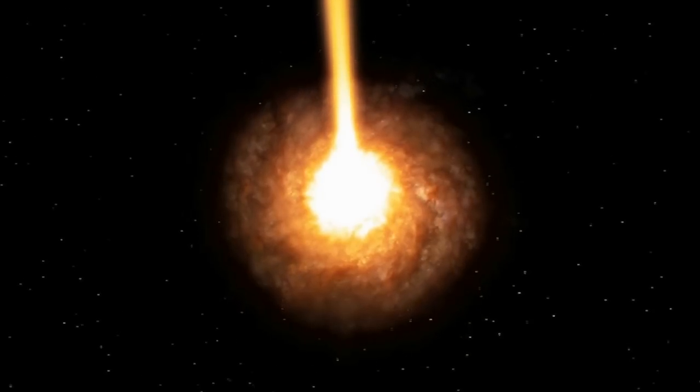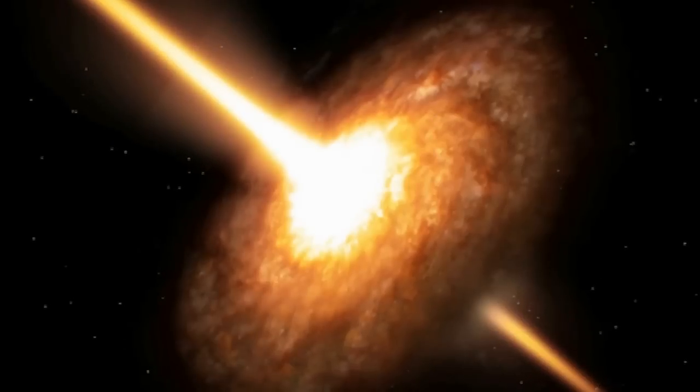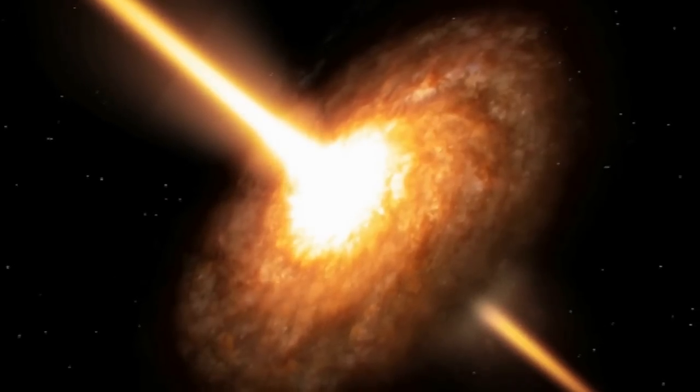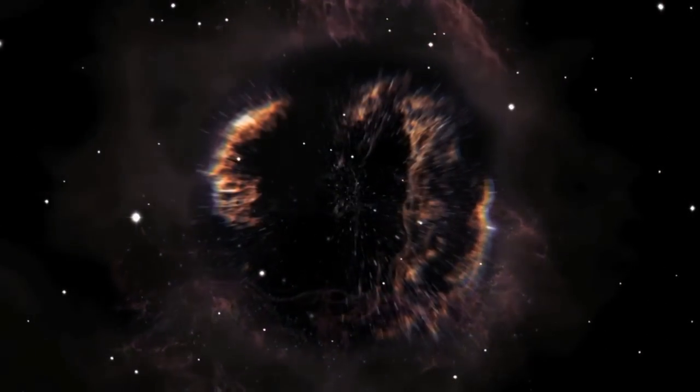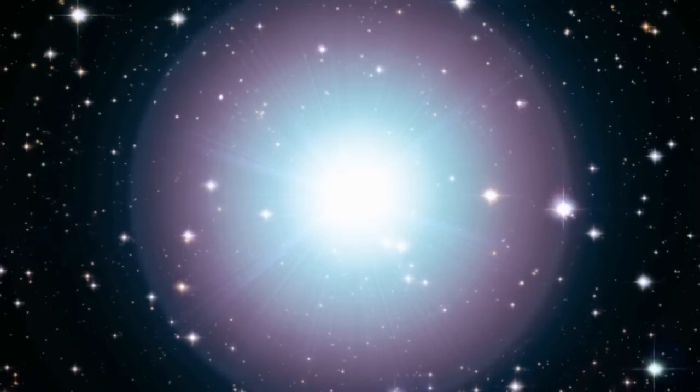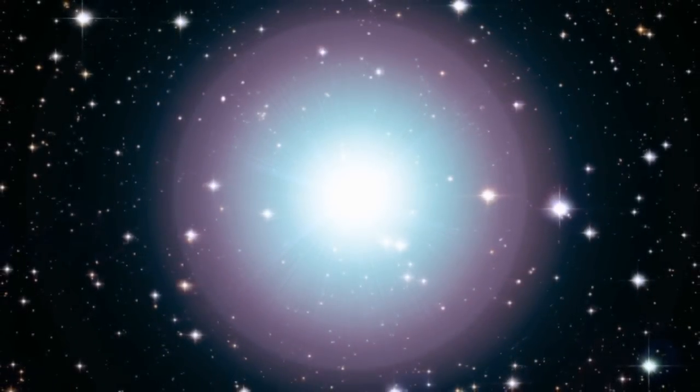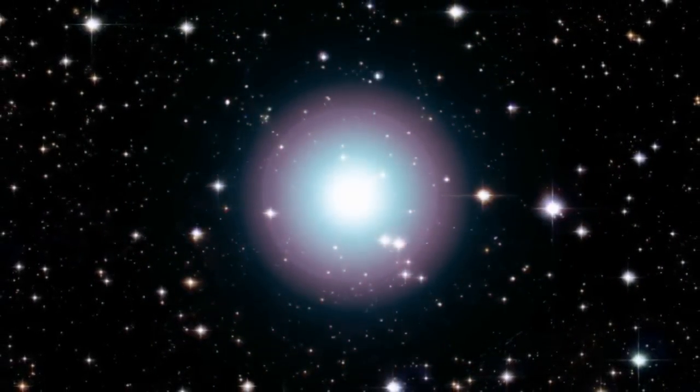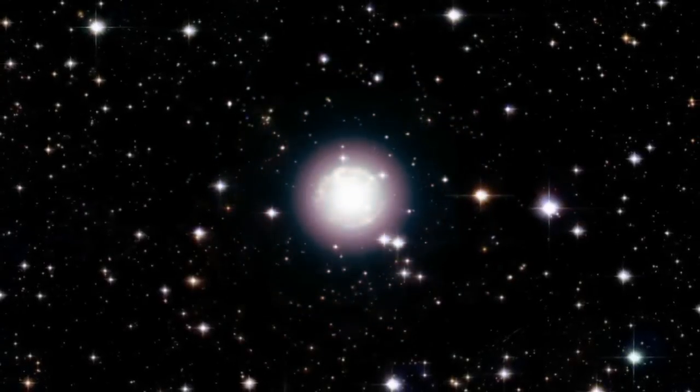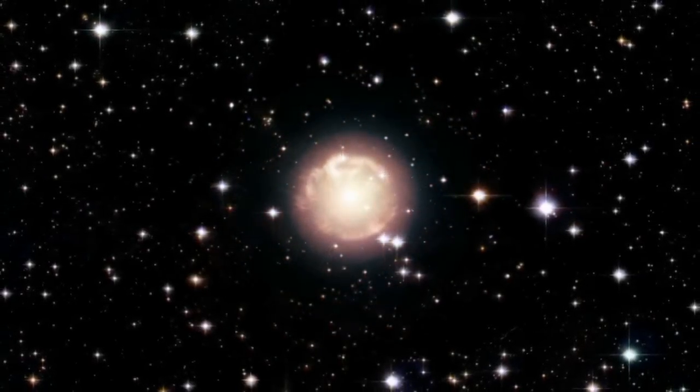Black holes come in different sizes. We've had solid evidence for the smaller ones since the 1970s. These form when a huge star explodes at the end of its life. As the outer layers are blown away, the star's core collapses in on itself, forming an incredibly dense ball. For instance, a black hole with the same mass as the Sun would have a radius of only a few kilometers.